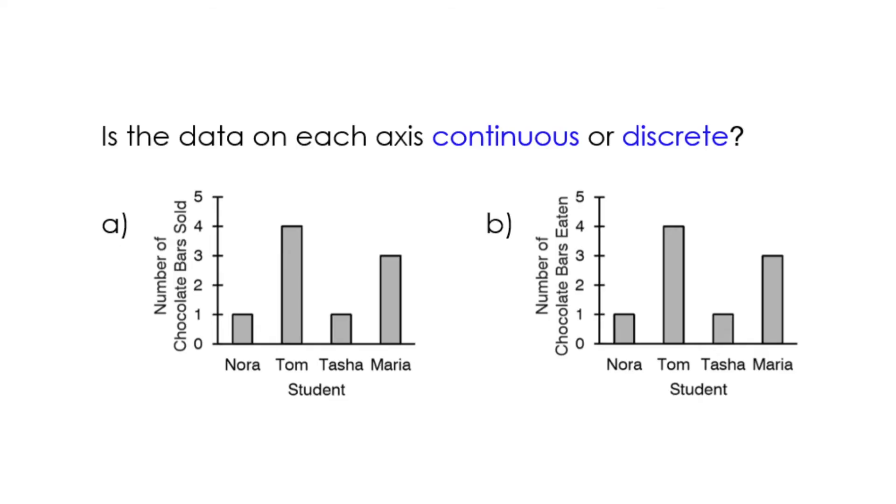Is the data on each axis continuous or discrete? So number of chocolate bars sold, this is discrete. You can actually count this. Now for the number of chocolate bars eaten, this can be different.